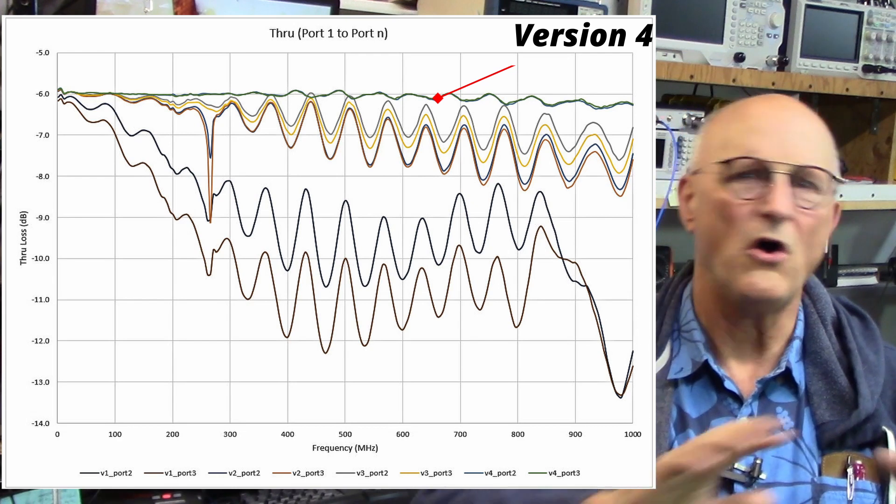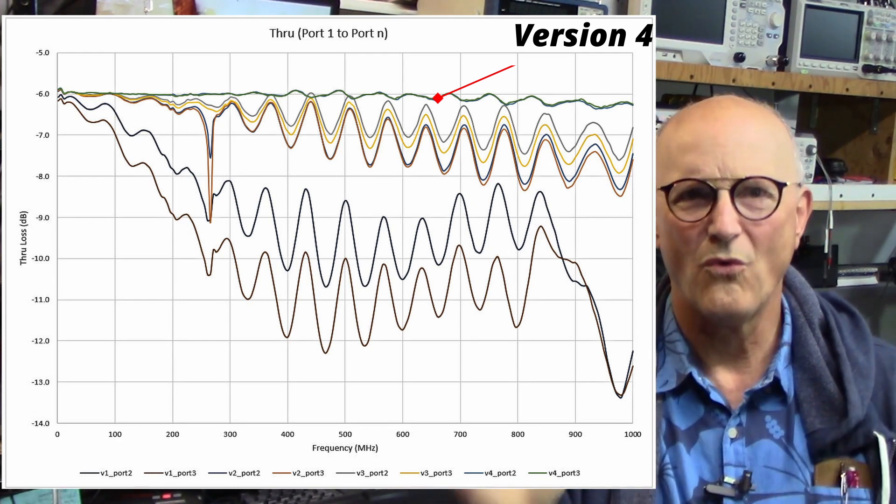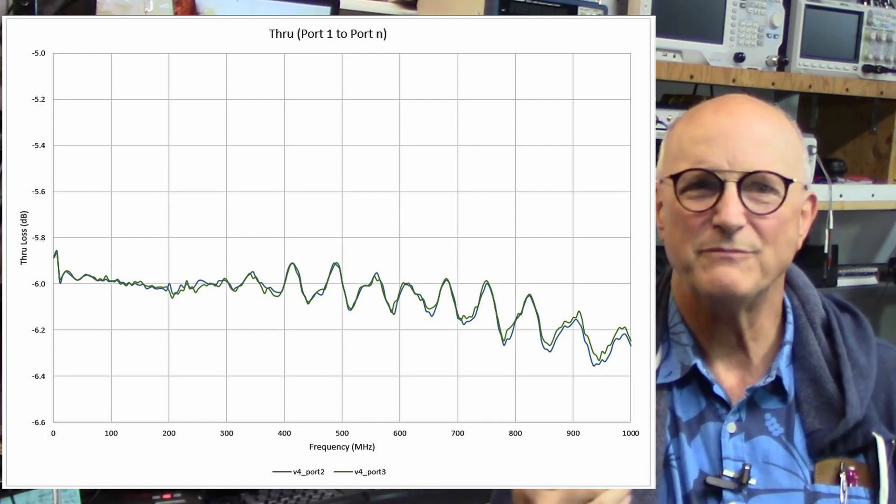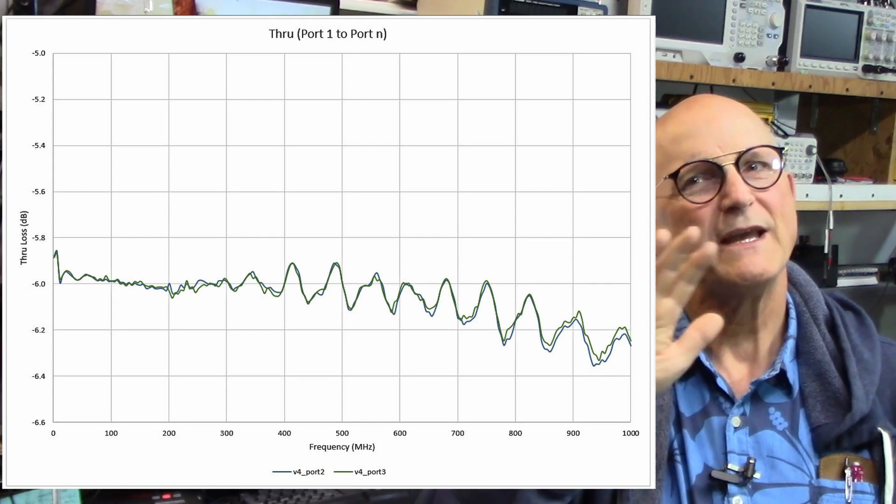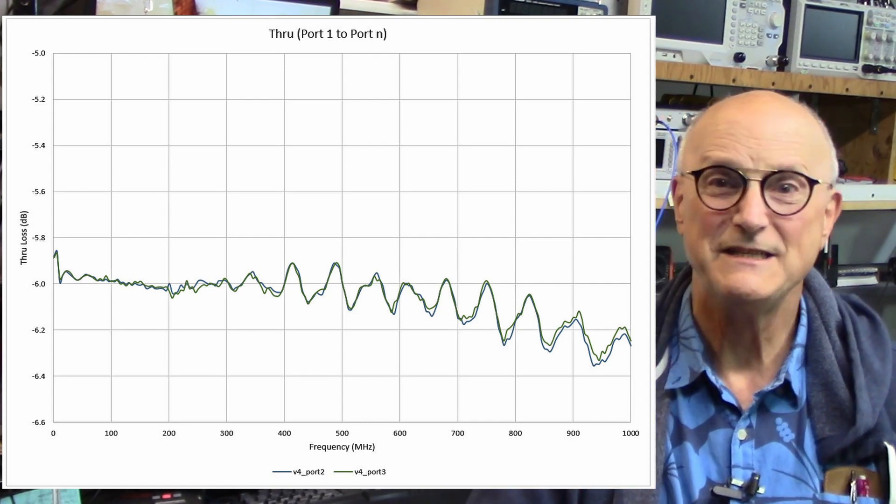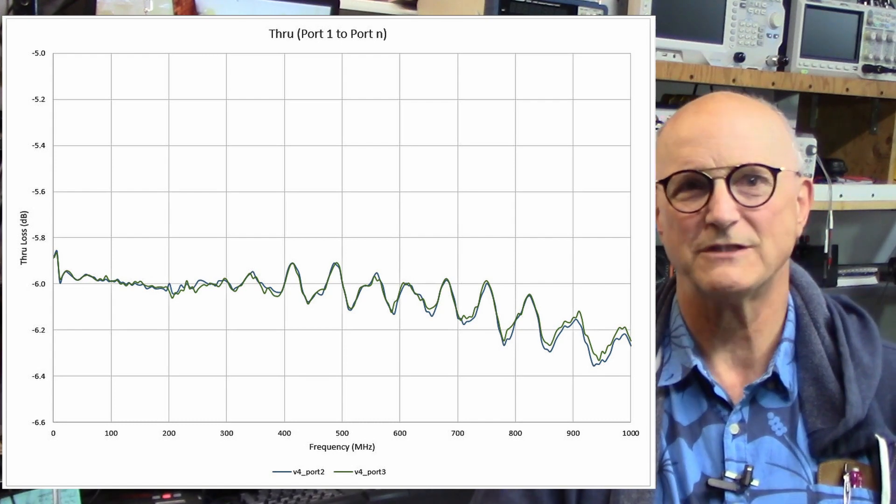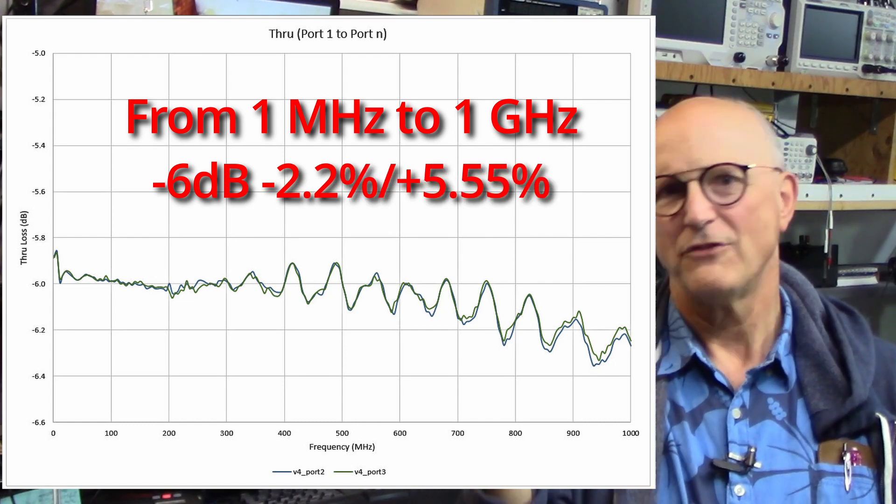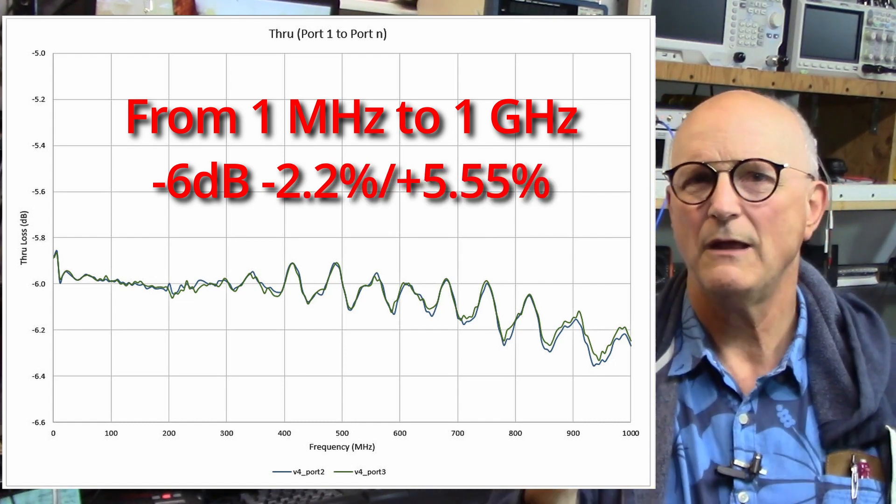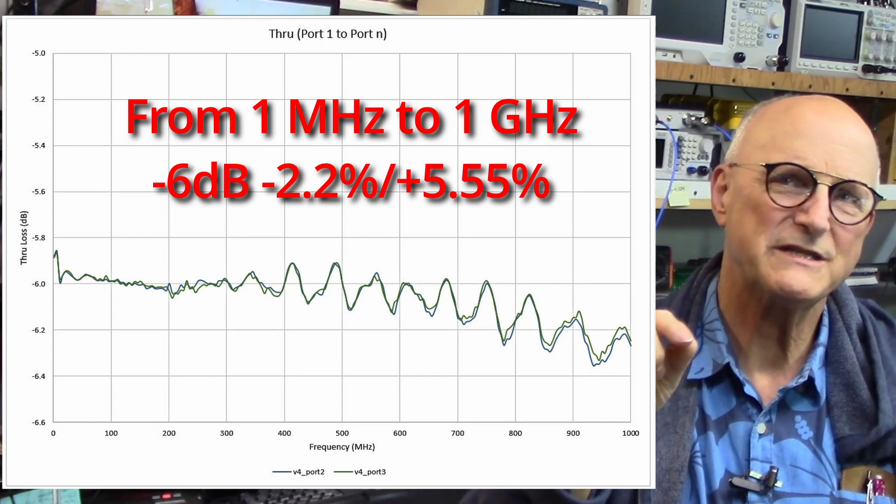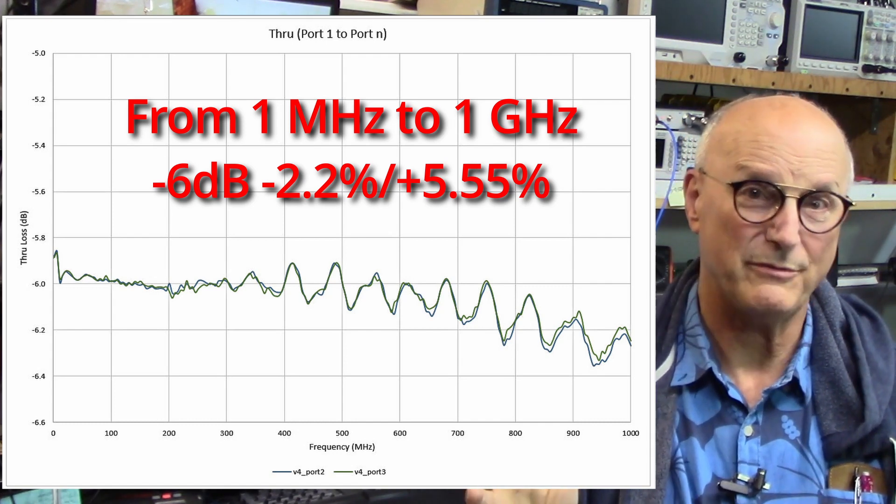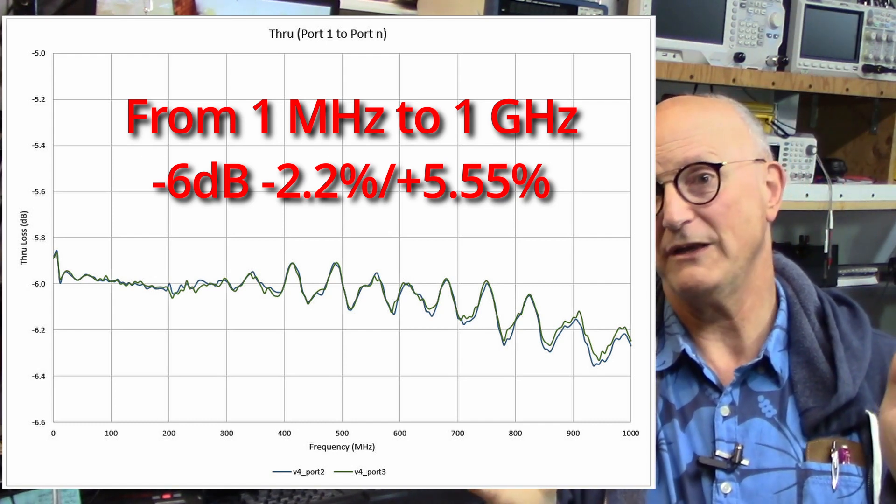But what about the through response? Again, in comparison to all of the versions before, it is way awesome. Look at this through response by itself. It still looks wonderful to me. Okay, so it's not perfectly smooth, but it is significantly better than any of the previous versions. Across this whole range from 1 megahertz to 1 gigahertz, the through response is minus 6 dB minus 2.2% plus 5.55%. And this is very respectable, especially considering the experimental nature of the project.